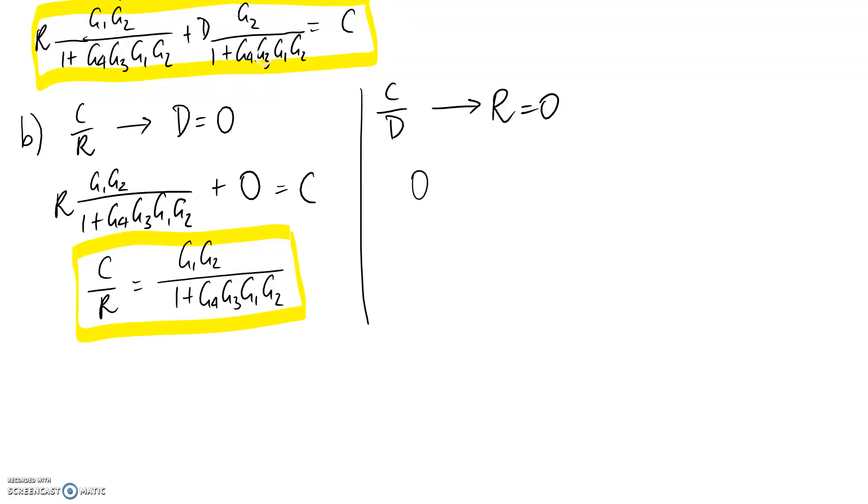This remains the same and C on the other side remains the same, so we can rearrange for C divided by D just by dividing this down.